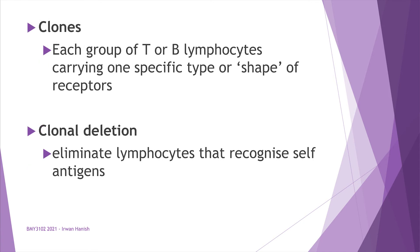Antigen-specific receptors have diverse shapes. A group of T or B cells carrying the same shape of receptors is called a clone — all cells in clone X carry the same X receptor, and all cells in clone Y carry a Y receptor.